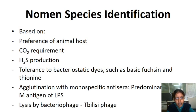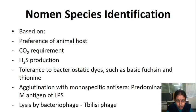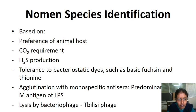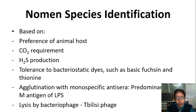Species identification is based on preference of animal host, carbon dioxide requirement, hydrogen sulfide production, urease activity, tolerance to bacteriostatic dyes like thionine and basic fuchsin, agglutination with monospecific antiserum (A or M antigen of lipopolysaccharide), and lysis by bacteriophage (mostly Bk phage). M antigen is predominantly found in Brucella melitensis; A antigen is predominant in Brucella abortus; in suis, either M or A antigen can be predominant.